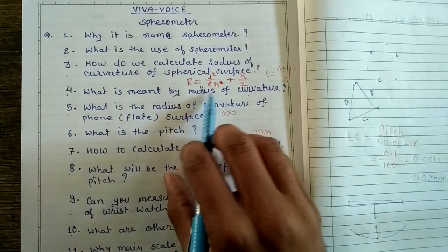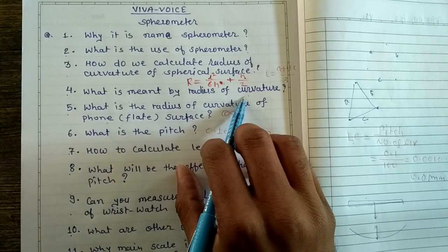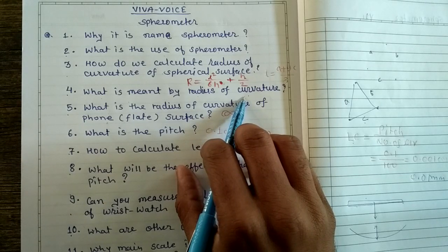What is meant by radius of curvature? Radius of curvature is the radius of that sphere from which the spherical surface is cut.